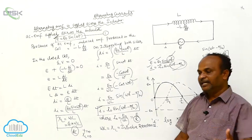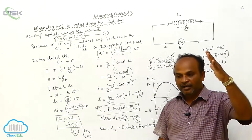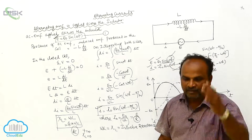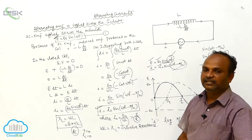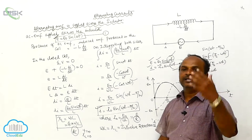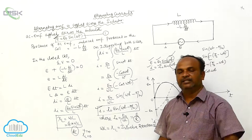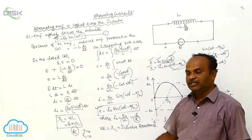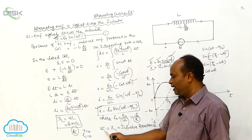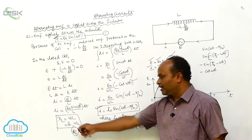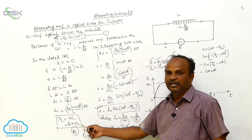The resistance offered for the flow of AC currents by the inductor is called inductive reactance. In the case of a pure inductor, the inductive reactance value XL is equal to ωL, or XL is equal to 2πνL.